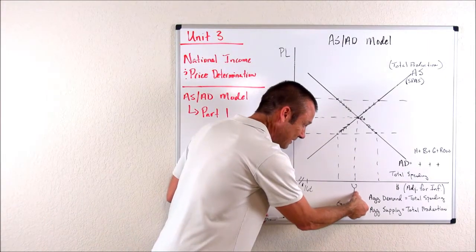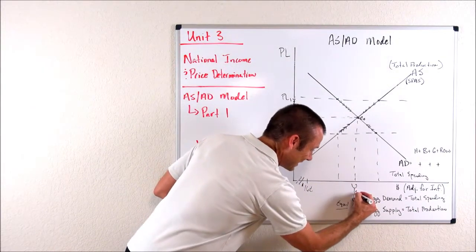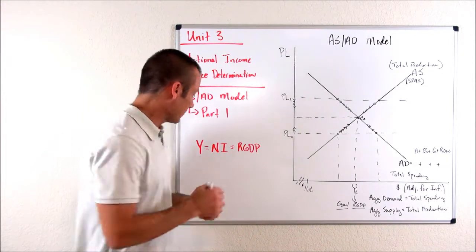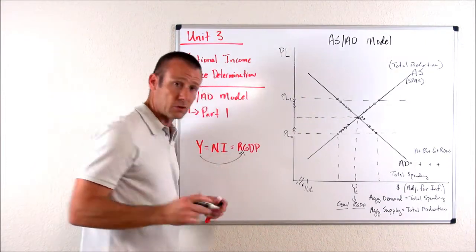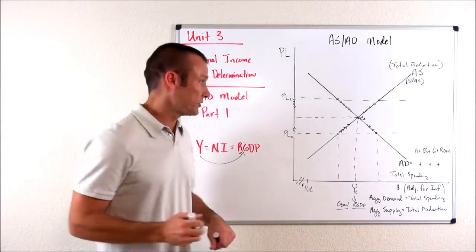So now I'm going to change this from Y zero to Y E, Y E, our equilibrium real GDP. Y equals real GDP. Y E is our equilibrium real GDP. Price level E, equilibrium price level.